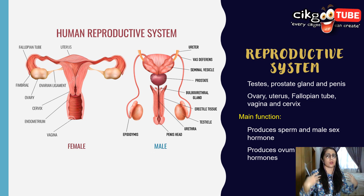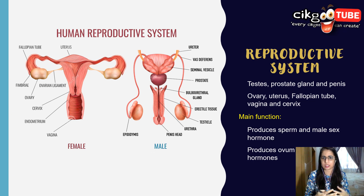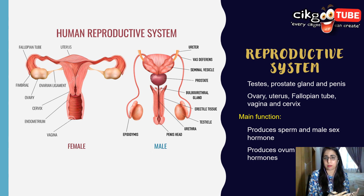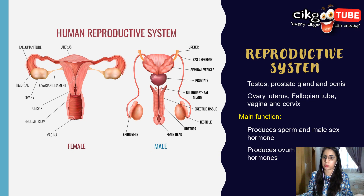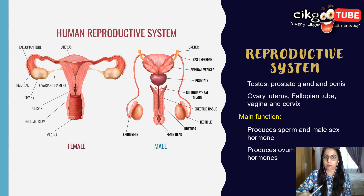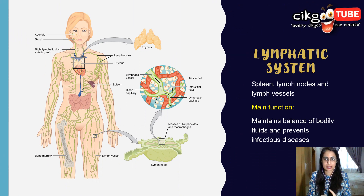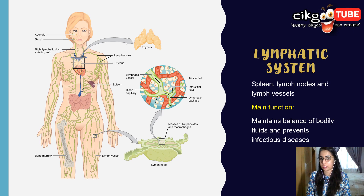The reproductive system consists of the testis, prostate gland, penis, ovary, uterus, fallopian tube, vagina, and cervix. The male reproductive system produces sperm and male sex hormones, while the female system produces ovum and female sex hormones. You will study this further in Chapter 15.